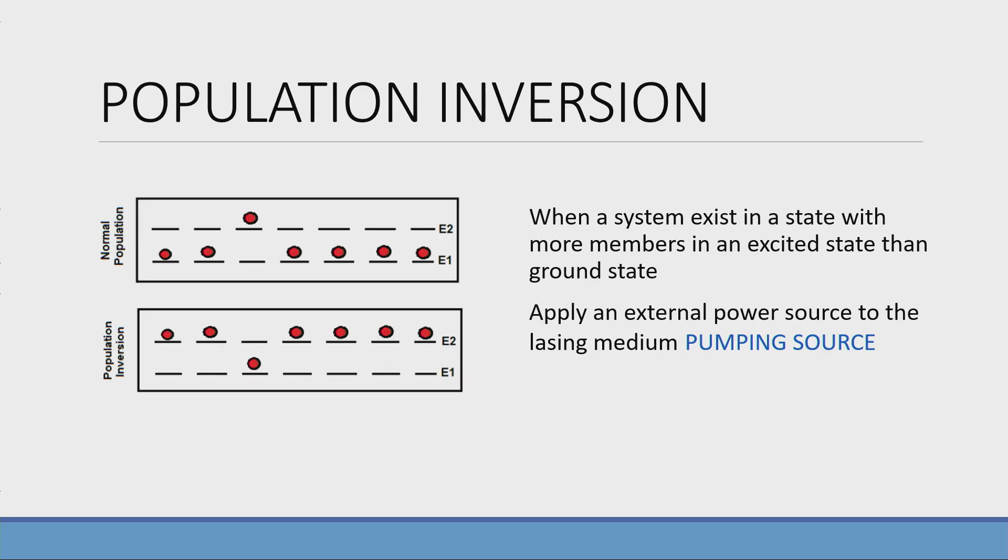In order for the stimulated emission to happen, we need atoms in the excited state. So a system where more atoms are in the excited state is known as population inversion. For population inversion to happen, we have to use an external power source. It can be optical or electrical.